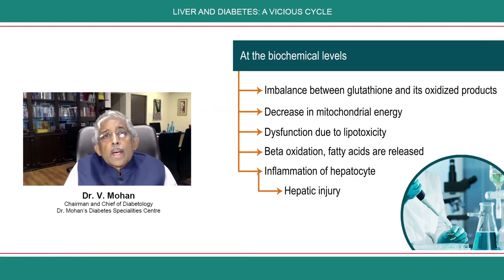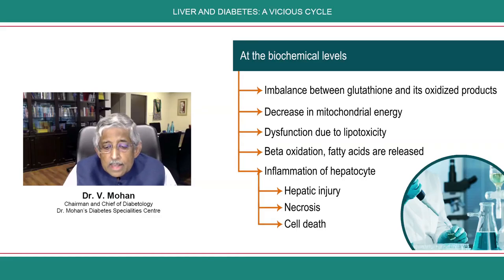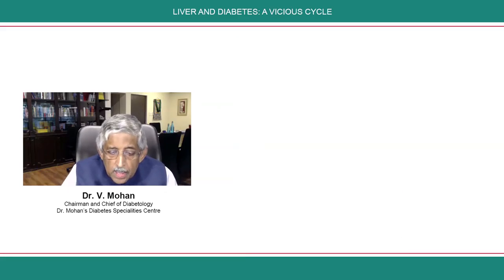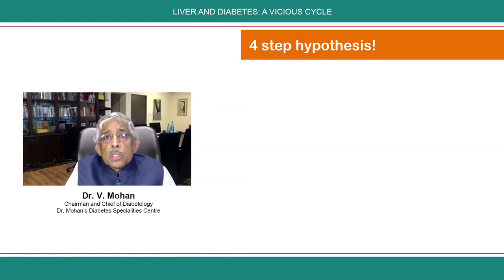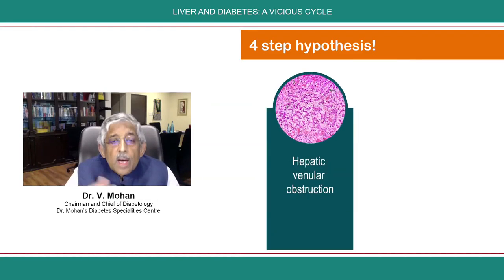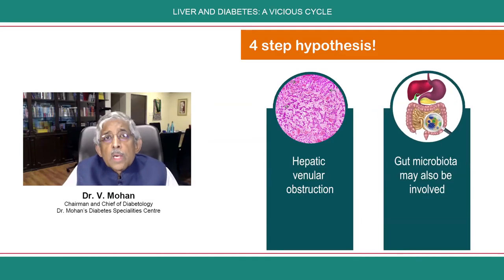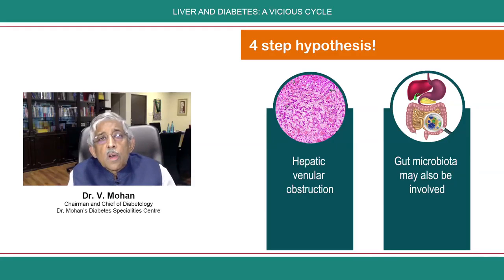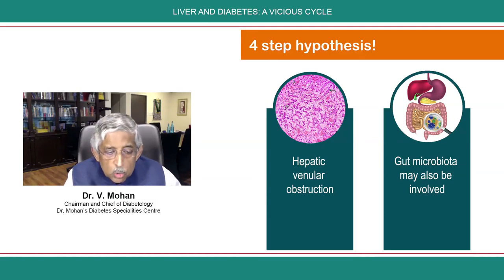This leads to hepatic injury, hepatic necrosis, and cell death, progressing to fibrosis and then to cirrhosis. There are others who say it is not just a two-step hypothesis but probably a four-step hypothesis, bringing in hepatic venular obstruction, gut microbiota, and other factors involved in the pathogenesis of chronic liver disease and its connection with diabetes.